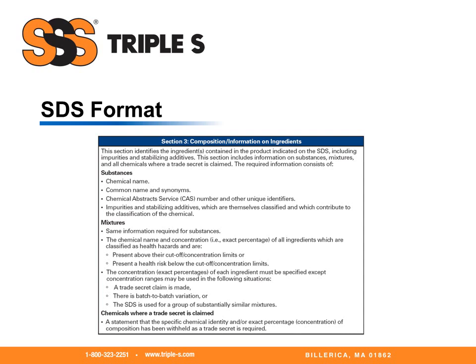It will also describe any hazards not otherwise classified. Section three, composition and information on ingredients. This section identifies the ingredients contained in the product. This information will include the chemical name, possibly a common name, and the Chemical Abstract Service (CAS) number as a unique identifier. If the product is a mixture, the chemical ingredients will also include a percentage either as an exact number or as a range. Chemicals may also be listed as a trade secret.